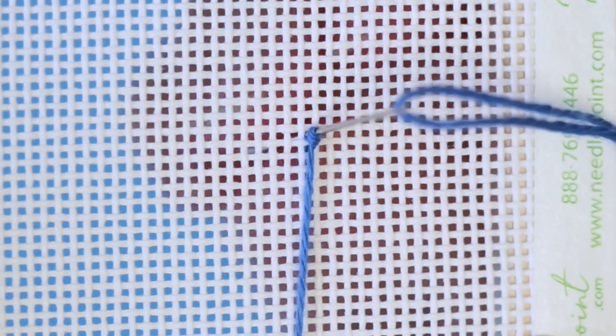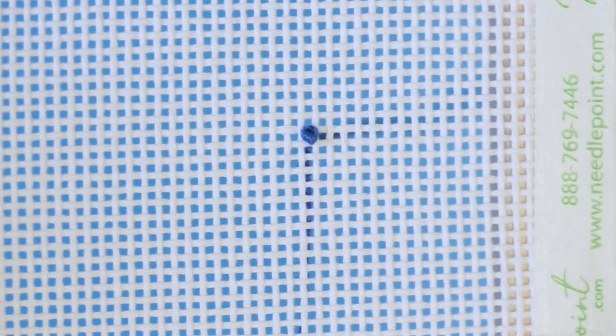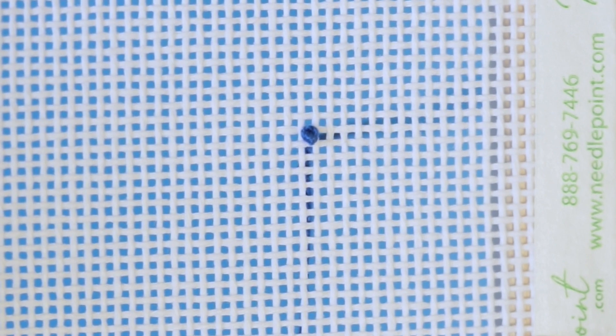Pull the thread taut so that the knot itself is in place flush with the canvas. Pull your needle back through the canvas and now you'll have the perfect French knot.